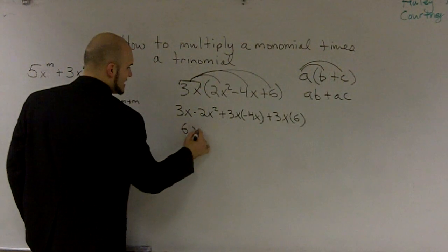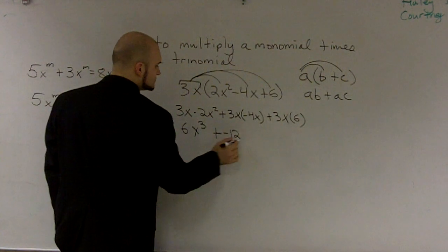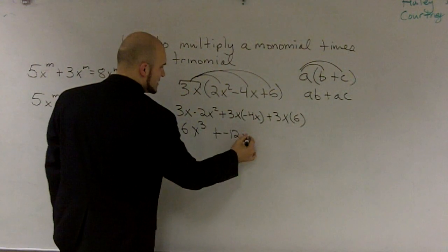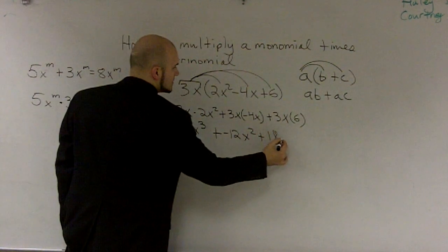So I'm going to get 6X cubed plus negative 12. And then X times X is X squared. And then 6 times 3 is 18, plus 18X.